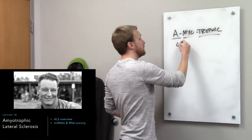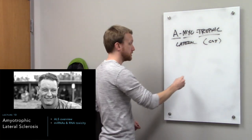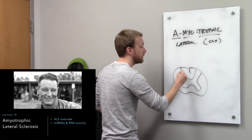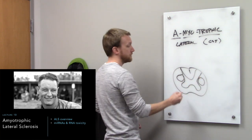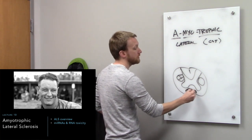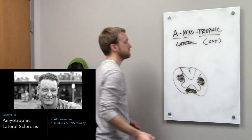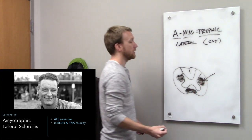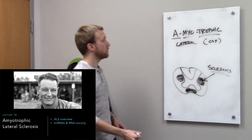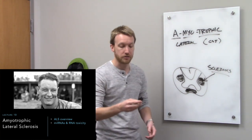The lateral aspect deals with the corticospinal tract in our spinal cord. The corticospinal tract — at least the lateral portion — runs in the lateral part of the spinal cord, and there's also an anterior portion running down the anterior spinal cord. The sclerosis refers to lesions in those lateral portions. So ALS has a name that makes sense as long as you can break down the words.